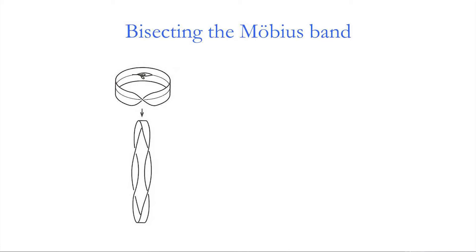Now what happens when we cut the Möbius band? Surprisingly, you don't obtain two separate Möbius bands but a single band. This single band has four half-twists rather than the one half-twist we started with.